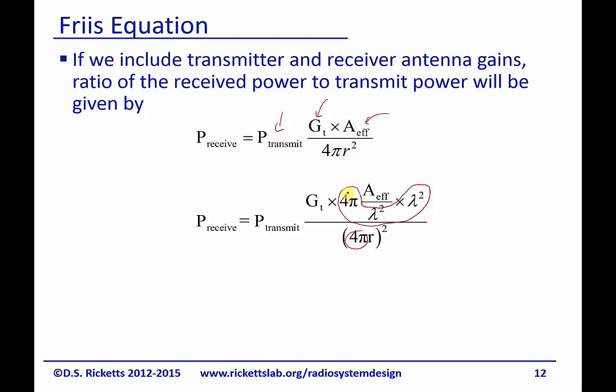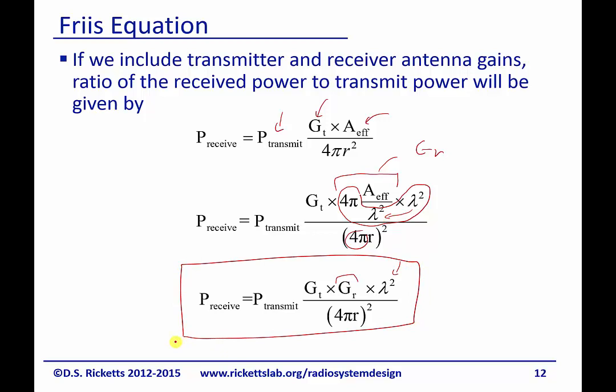We can recognize this as simply being the gain of the receiver, and we've got this λ/2 here. It came in because we used it to cancel out what we put in the bottom. This is what ends up being the Friis equation.